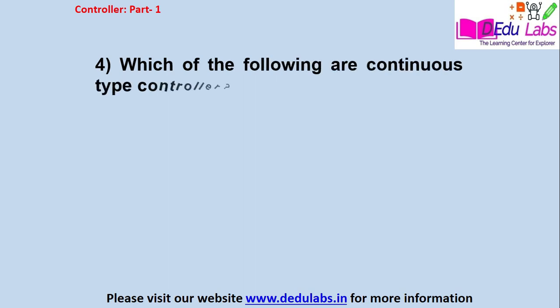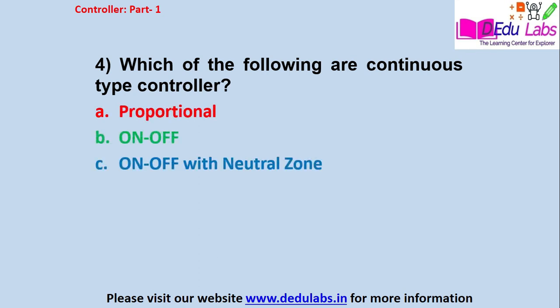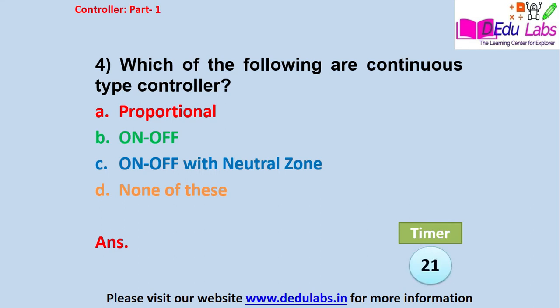Question number 4: which of the following are continuous type controllers? Option A: proportional; Option B: on-off; Option C: on-off with neutral zone; Option D: none of these. The answer is Option A, proportional. In a proportional controller, every unique value of the error gives a unique controller output, so it is a continuous type controller.